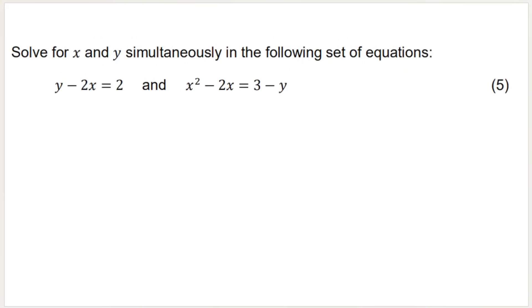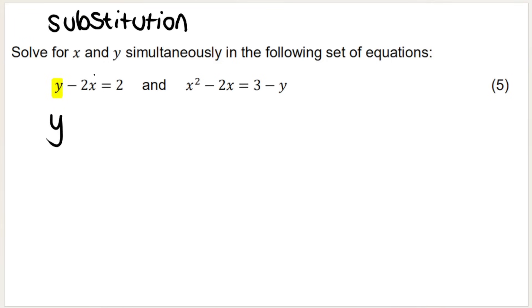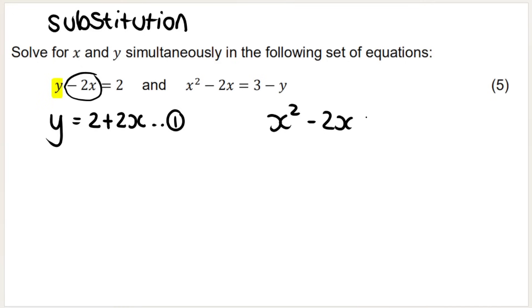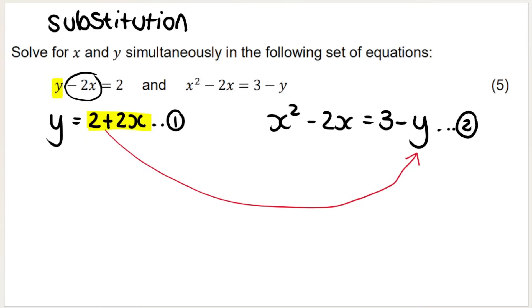Now solve for x and y simultaneously. In simultaneous equations, your first step is to pick one equation and make one variable the subject. I'll choose the first equation and make y the subject. The inverse of minus 2x is plus 2x, so y equals 2 plus 2x. Now rewrite the second equation, and substitution means we take what y equals — 2 plus 2x — and replace every y in the second equation with it.